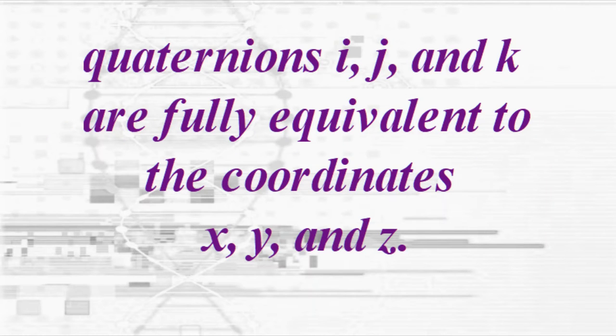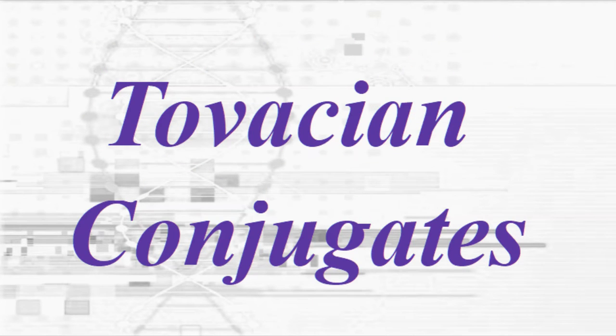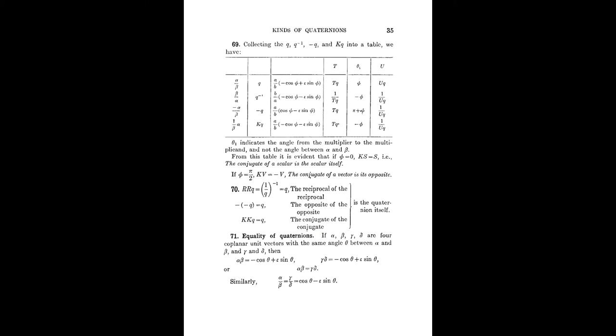The three most common unit quaternions are the quadrantal versors i, j, and k. It is extremely important to note that i, j, and k are fully equivalent to the Cartesian coordinates x, y, and z. In QUIC, the operations of conjugates play a major role. Conjugates generally mean opposites, but by the rules of quaternions, reciprocals, opposites, and conjugates are not necessarily the same — even though all three are designated as being negative. These conjugates may assume a variety of different forms.